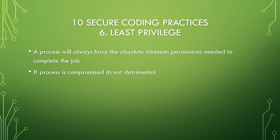Number six is least privilege. This means you should always give a section of your program — any individual process — the absolute minimum permission needed to complete the job. This is a safe way of making sure that if one of your processes is compromised, it's not going to lead to a hacker being able to exploit everything within your program.